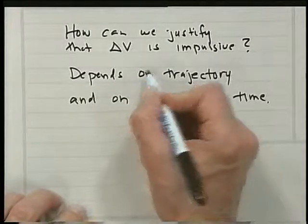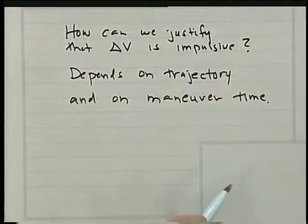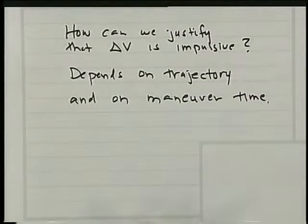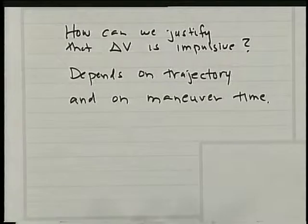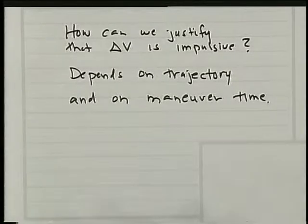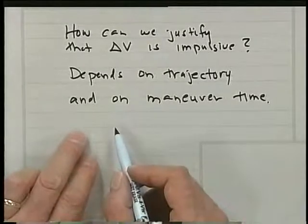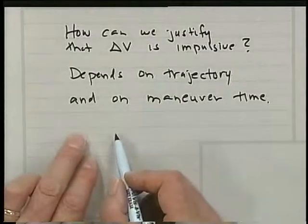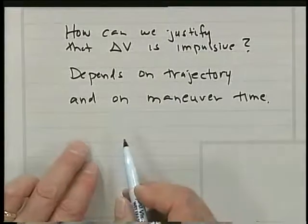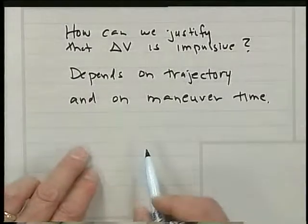The vehicle would move some distance, and the question would be: how much has the potential energy changed during that time? If that's an inconsequential value, then you can get away with the impulse of delta-V. And in fact, there's much experience behind this, and so it is known that this, in fact, works.